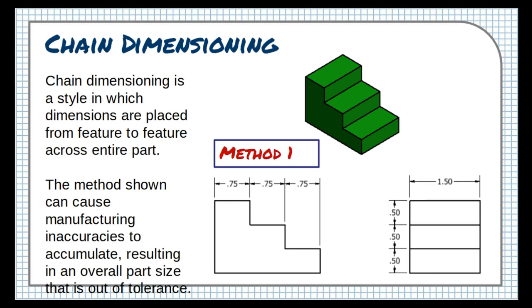When products are manufactured, their dimensions always vary slightly from one product to the next. Engineers specify how much these dimensions are allowed to vary using a tolerance.